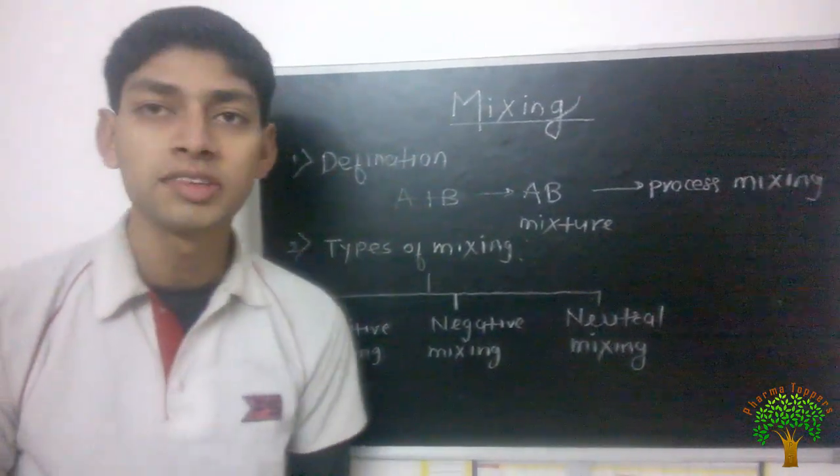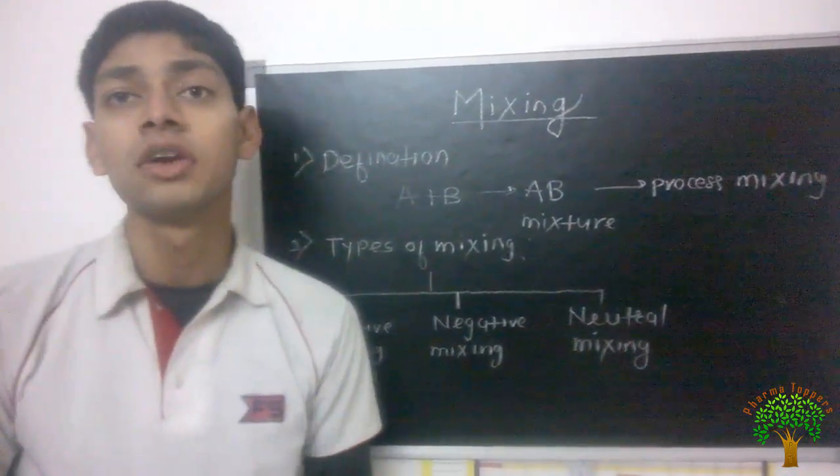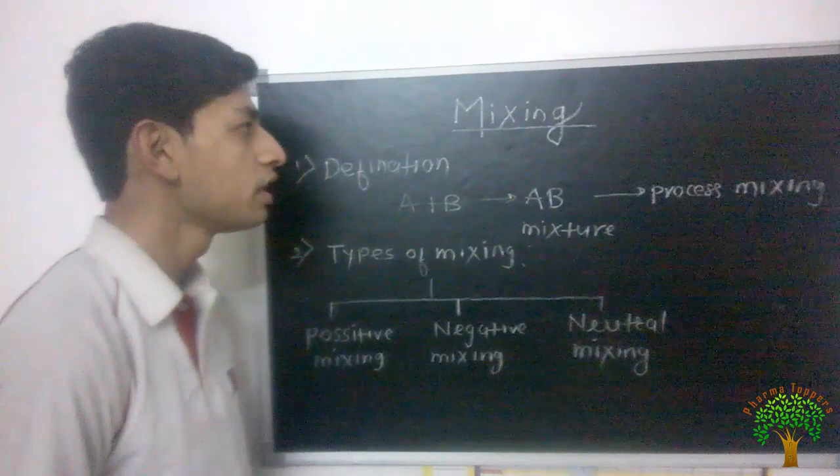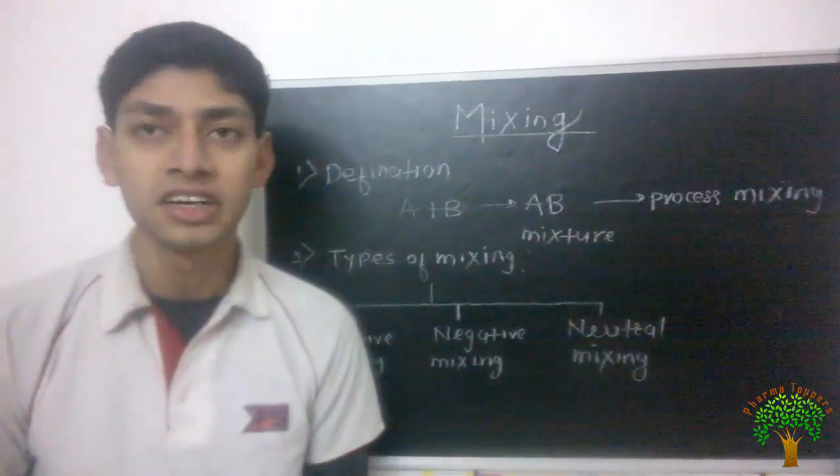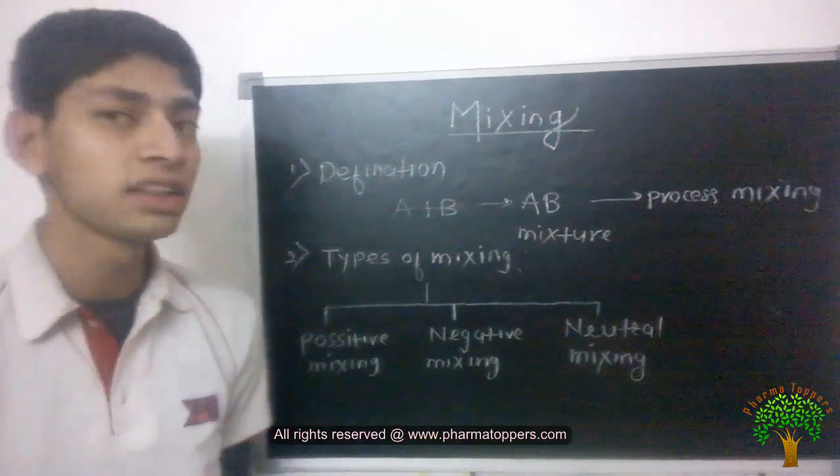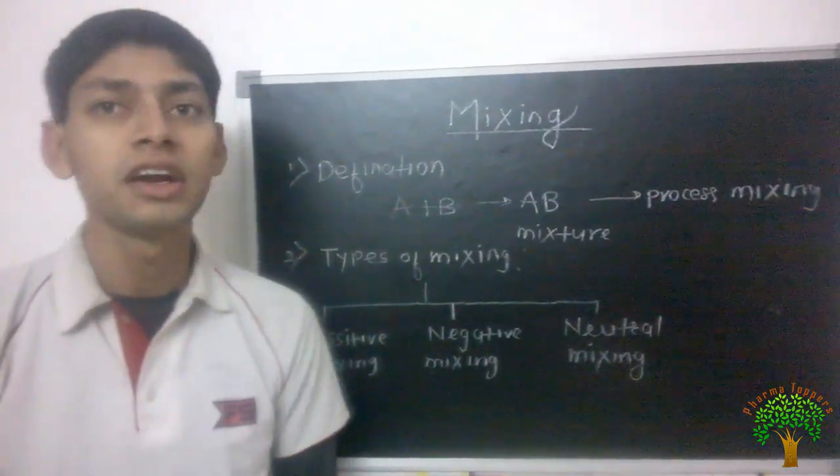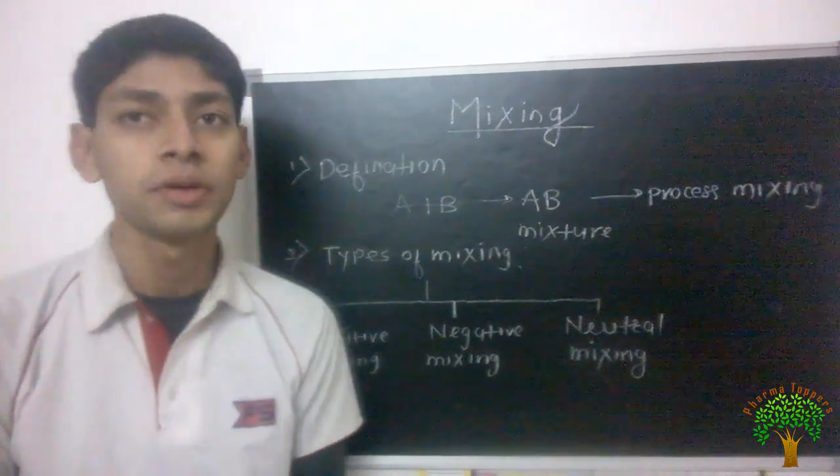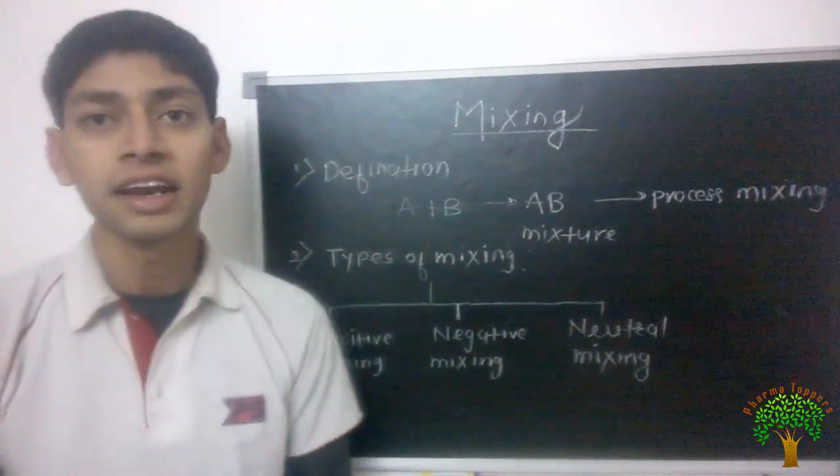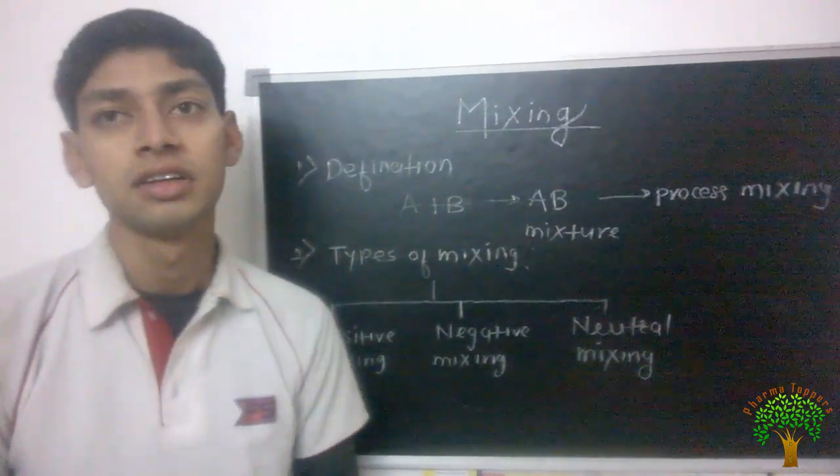Now neutral mixing. Neutral mixing is very difficult to mix as well as difficult to demix. Demixing is a process of segregation, also called segregation. In case of neutral mixing, when these two components are mixed it is very difficult because it requires higher energy for the mixing. But once the energy is applied for mixing and they mix, they will not separate.